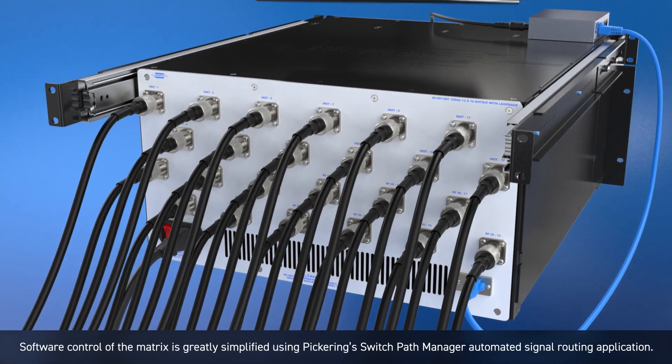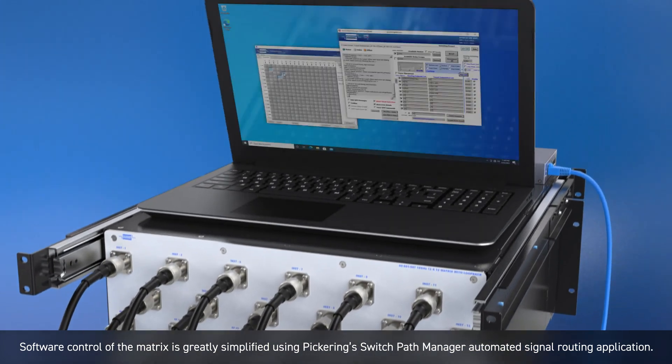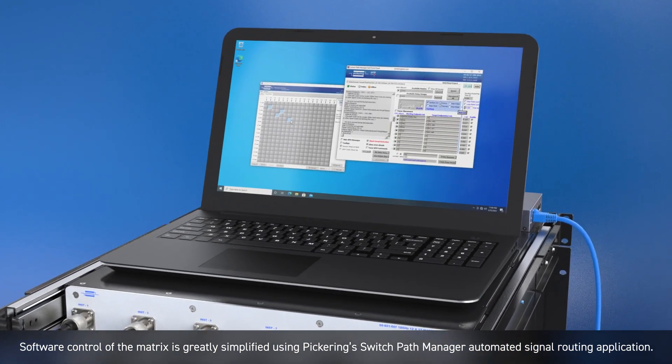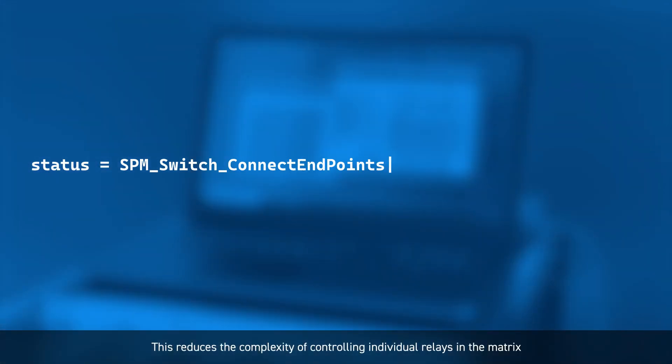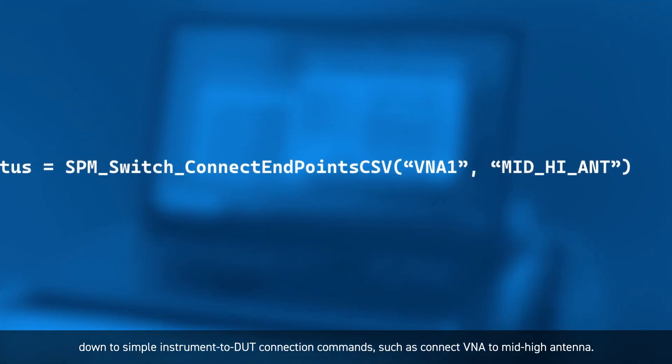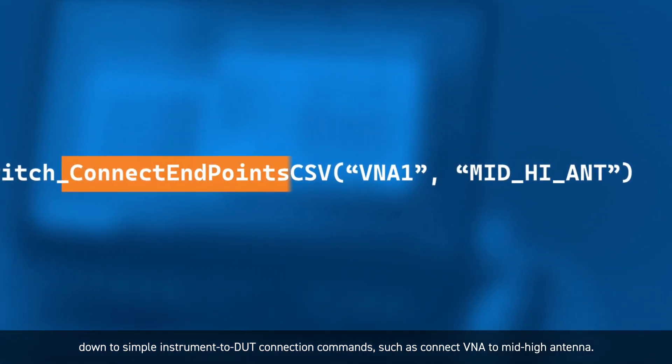Software control of the matrix is greatly simplified using Pickering's Switch Path Manager automated signal routing application. This reduces the complexity of controlling individual relays in the matrix down to simple instrument-to-DUT connection commands, such as connect VNA to mid-high antenna.